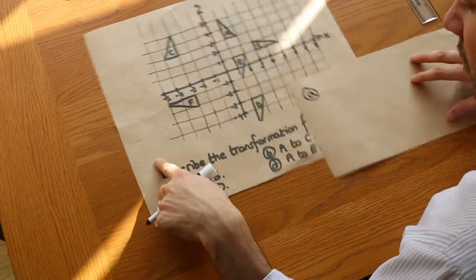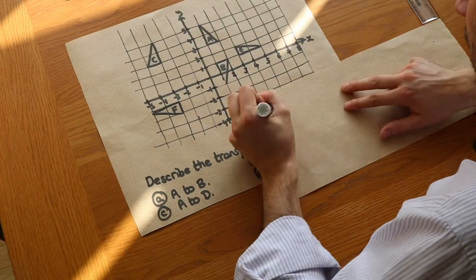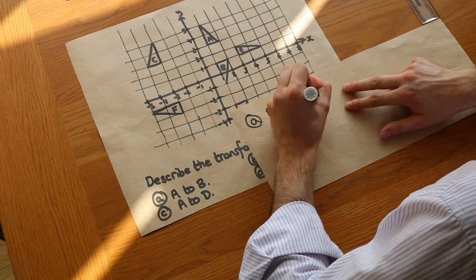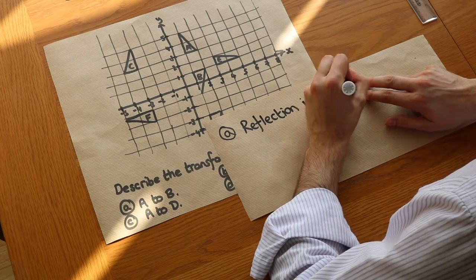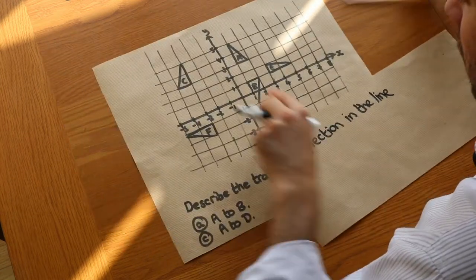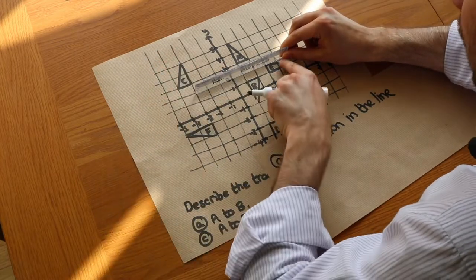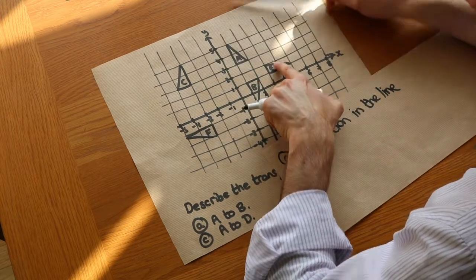So A, we want to describe the transformation from A to B, so from here to here. So we get one mark for just saying it's a reflection, the type of transformation it is. And we write reflection in the line and then we have to give the equation of that line. So if we look at it here, we can see it's this line here. Now any point we pick, we can see that the Y value is always 2. Look, this is 4, 2, that's 1, 2, etc.